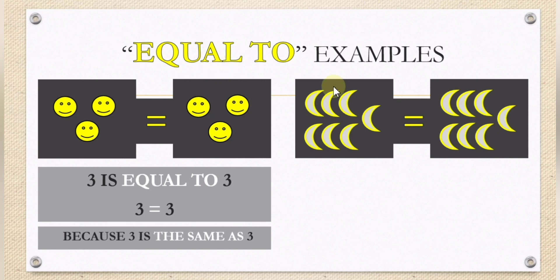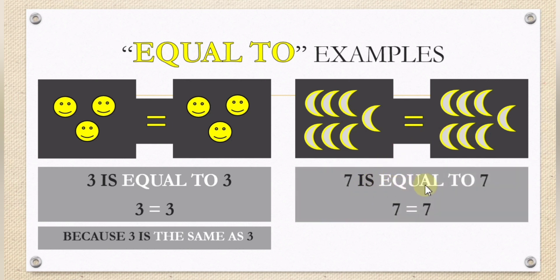Now let's count how many moons. One, two, three, four, five, six, seven. How about in the second box? How many moons? One, two, three, four, five, six, seven. Seven is equal to seven. Because there are seven moons inside the first box and another seven moons inside the second box — seven is the same as seven.